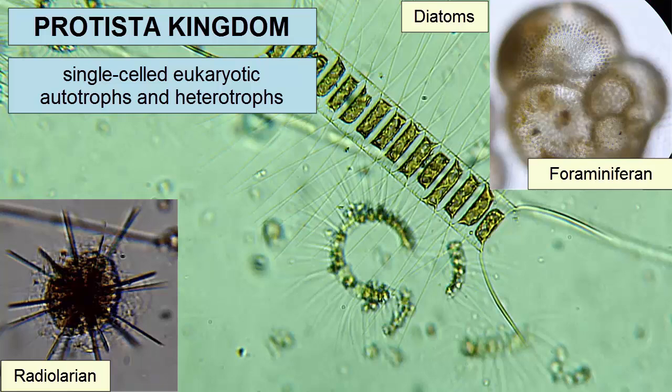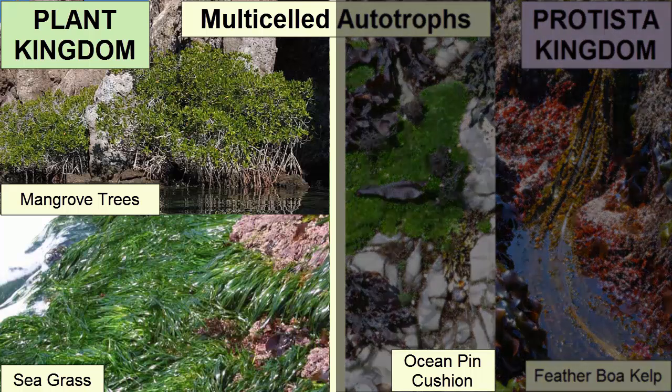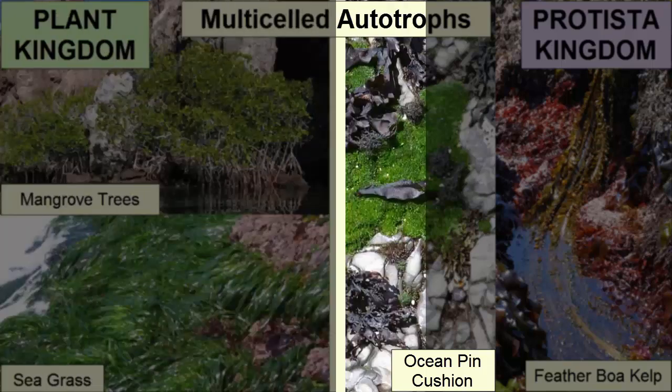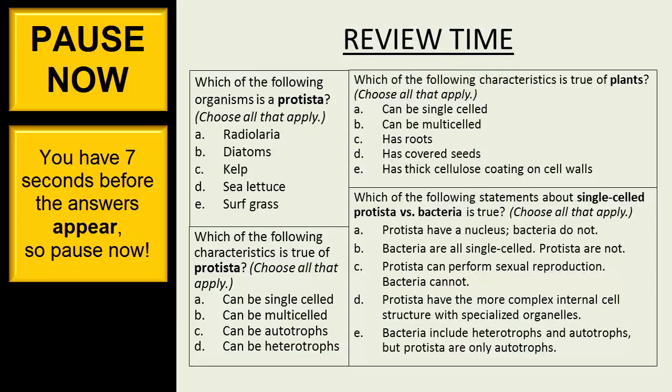The only plants found in the marine environment are flowering plants that include grasses and mangroves. If you are a single-celled eukaryotic autotroph or heterotroph, you are part of the Protista kingdom. If you are a multi-celled autotroph, you can be either a protista or a plant. Plants are only found where there are soils, have roots, covered seeds, and usually flower. Most autotrophs in the marine environment will be protista.